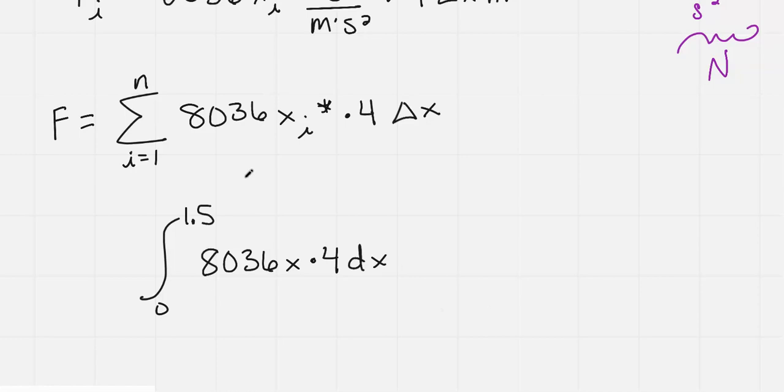And I didn't multiply the 8,036 times 4 yet, but you can do all that. So not a bad integral to work out, so I'm just going to put the answer. When you work this integral out, you get 36,162 newtons. And so that would be the force pushing up against one end of that tank.